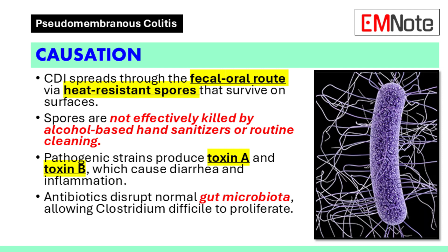Pathogenic strains of Clostridium difficile produce toxins, primarily enterotoxin (toxin A) and cytotoxin (toxin B), which can cause diarrhea and inflammation. Without either toxin A or toxin B, colonization is unlikely to cause pseudomembranous colitis. Antibiotics can disrupt the normal gut microbiota, allowing Clostridium difficile to proliferate.